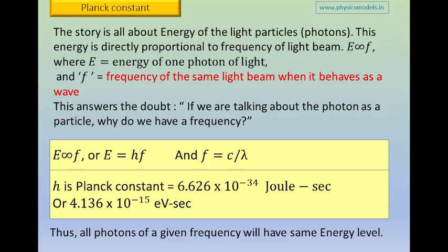So, energy of the incoming light beam photon or quanta or packet of energy was E, which is proportional to frequency, E proportional to F. So, E was equal to HF. Therefore, H became a proportionality constant and that's known as the Planck's constant.